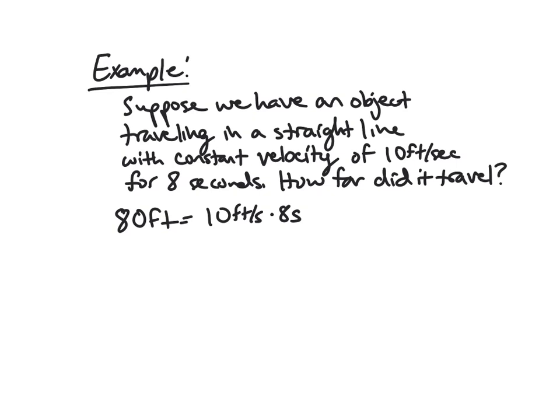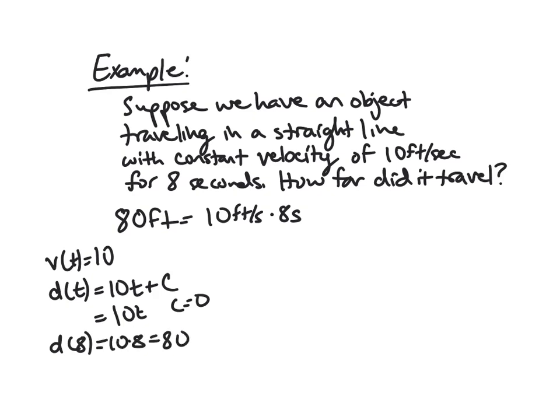There are a few ways we can interpret this. So first I want to think about the indefinite integral here. My 10 feet per second is my velocity, and I said this is a constant velocity. So if I want my position function, or my distance, I'll write it as d, then this is going to be 10t plus some constant. I know that I've traveled nowhere at 0 seconds, so it's really just 10t. My c is 0 because d of 0 is 0. Distance after 8 seconds is 10 times 8, and I get 80.